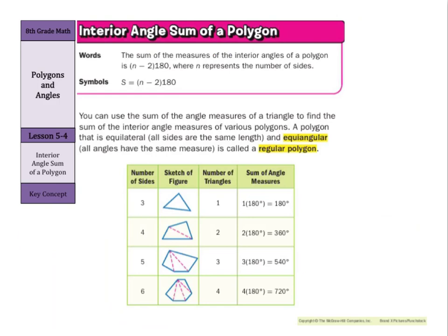Now you can use the sum of the angle measures of a triangle to find the sum of the interior angle measures of various polygons. A polygon that is equilateral, all sides are the same length, and equiangular, all angles have the same measure, is called a regular polygon.